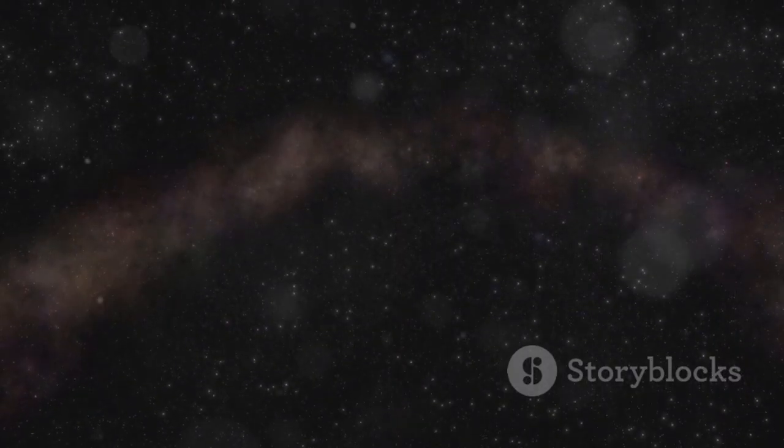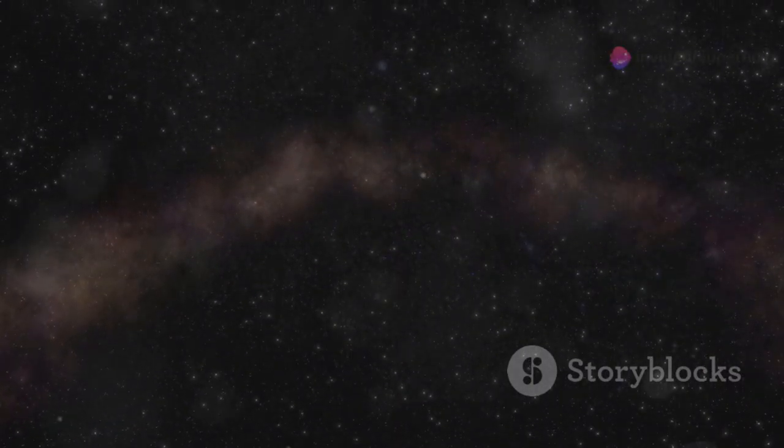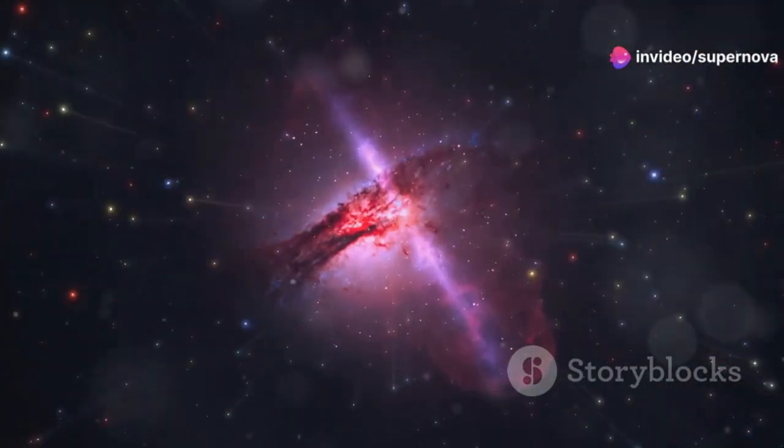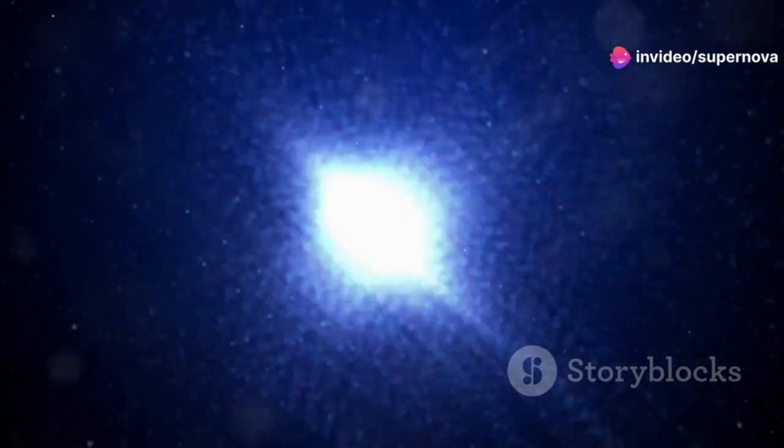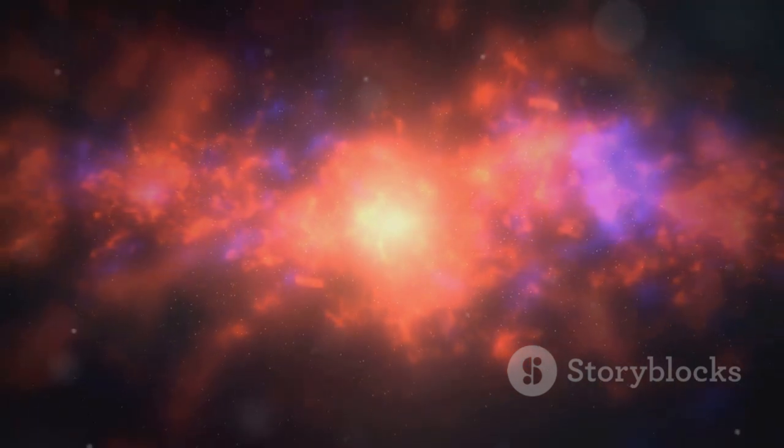Galaxies like the dots on the balloon are moving away from each other. We know this because of the red shift of light. As light travels from distant galaxies, its wavelength stretches. This stretching makes the light appear redder.